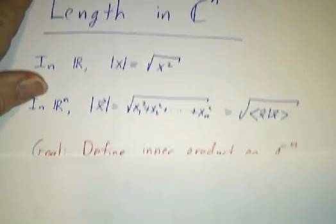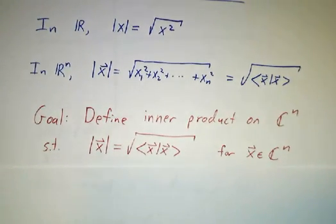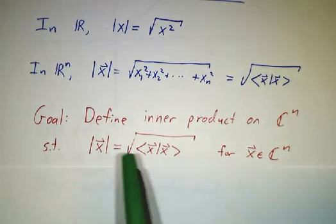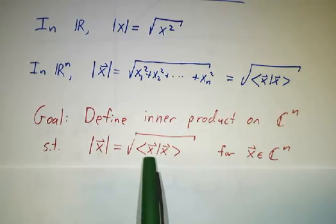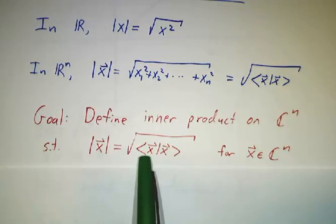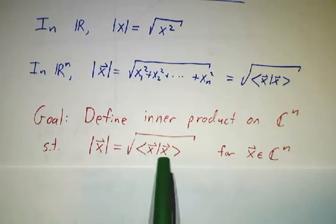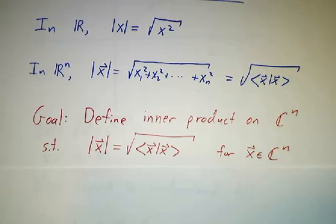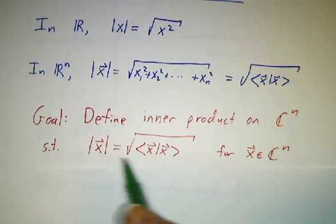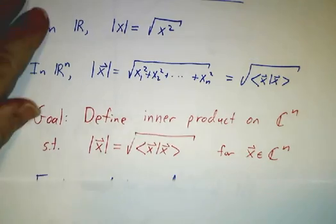Now, we'd like to have an inner product on C^n which has the same property. We'd like to say that the length of a vector in C^n is the square root of the inner product of that vector with itself. And to do that, we first have to understand what the left-hand side means, and then we can define the right-hand side appropriately.